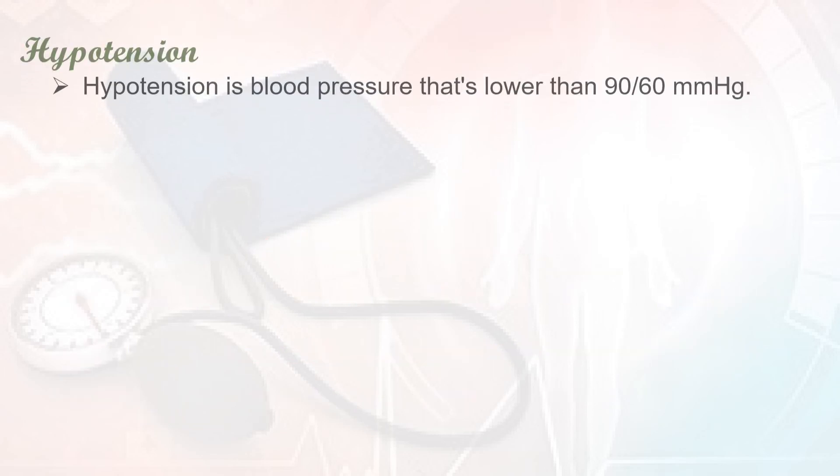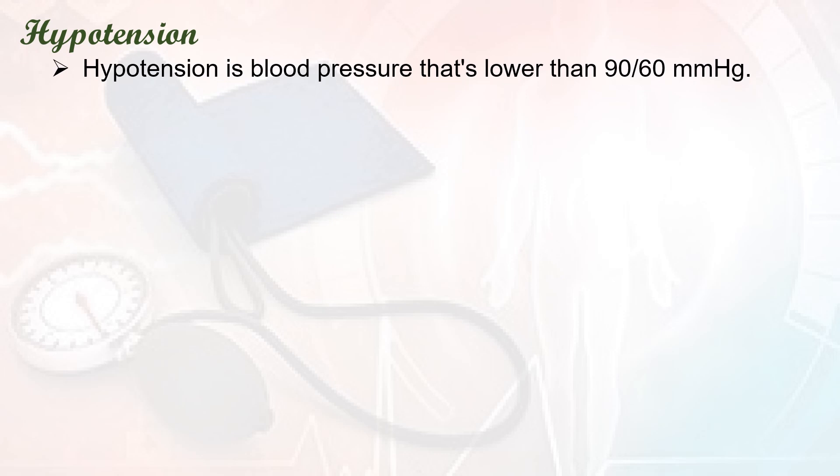Next, some terminologies. The first one is hypotension. Hypotension is a blood pressure lower than 90/60 mmHg — that is, systolic blood pressure less than 90 and diastolic blood pressure less than 60 mmHg.